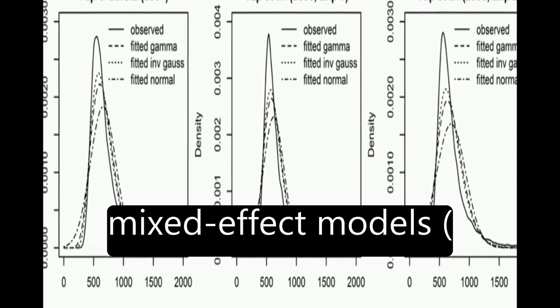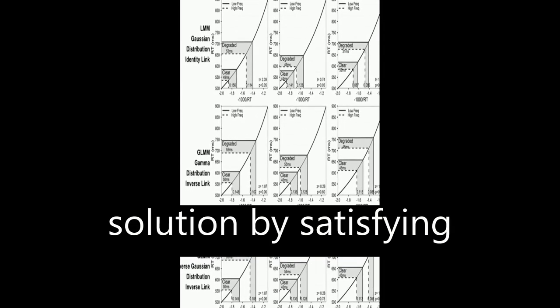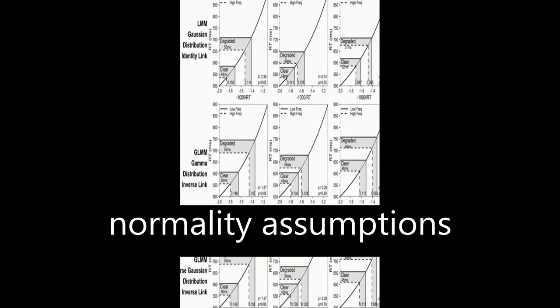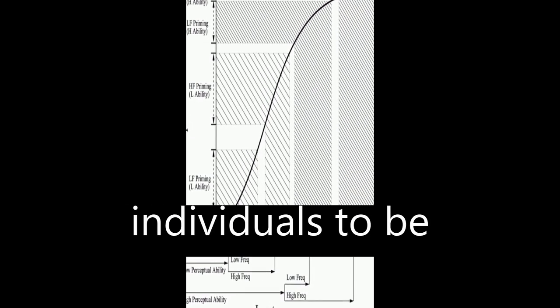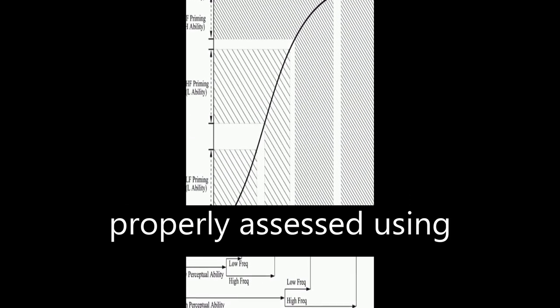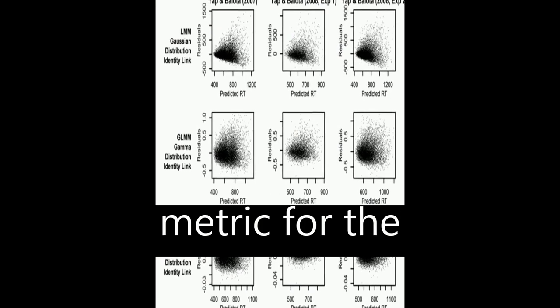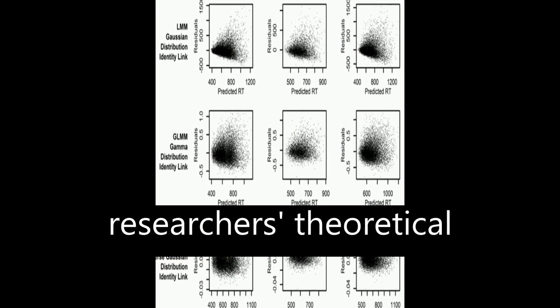Generalized linear mixed effect models, GLMMs, provide a solution by satisfying normality assumptions without the need for transformation, allowing differences between individuals to be properly assessed using the most appropriate metric for the researcher's theoretical context.